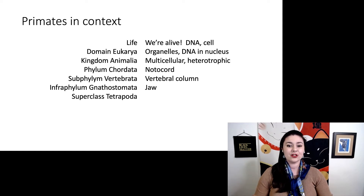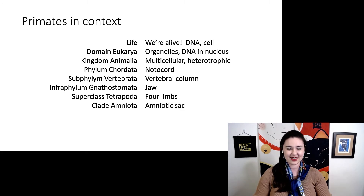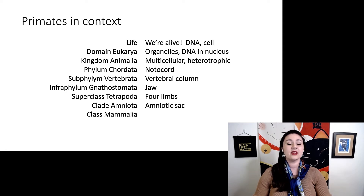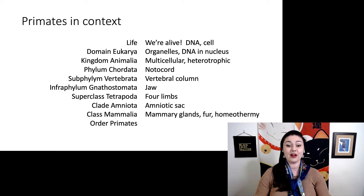Then we are in superclass Tetrapoda — we have four limbs. Within that, we are in clade Amniota, meaning we have an amniotic sac encasing our eggs. Then within that, we are in class Mammalia, so we have mammary glands, fur, and homeothermy.